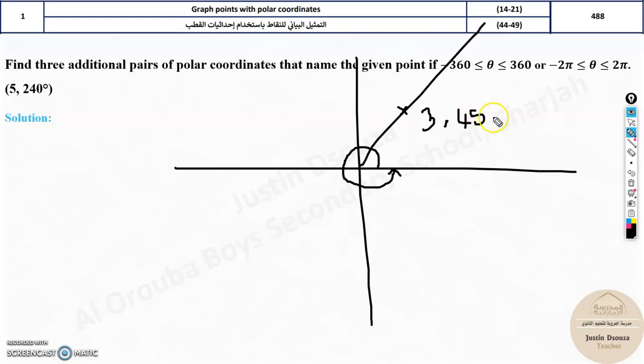But the same point can be represented in different names. Only in polar coordinates, the same thing can be given in different names. Now how can we mention it? We can mention instead of anticlockwise, we can take clockwise and write negative angle. We can tell from here to here it will be 360 minus 45. That will be 315. So what you do is (3, -315).